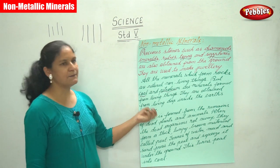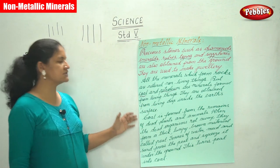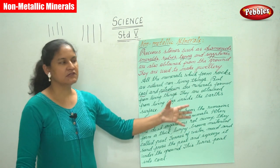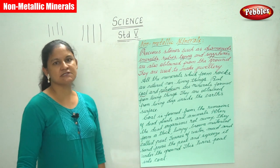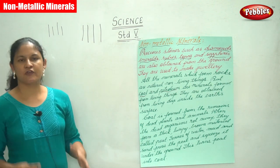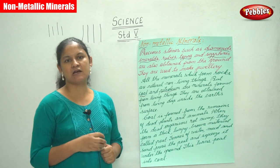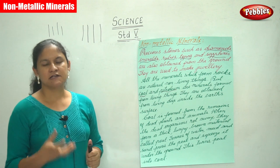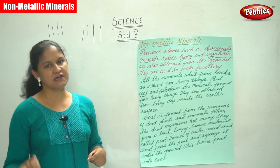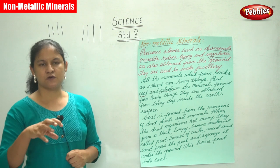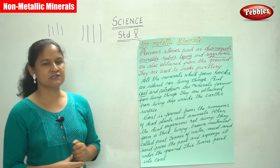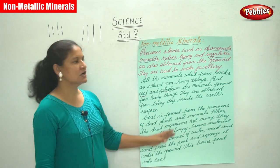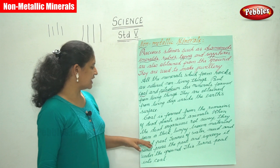Coal is obtained from the remains of dead plants and animals. When animals and plants die, they remain in that place until they get decomposed and are buried inside the ground. From these dead plants and animals, coal is formed.